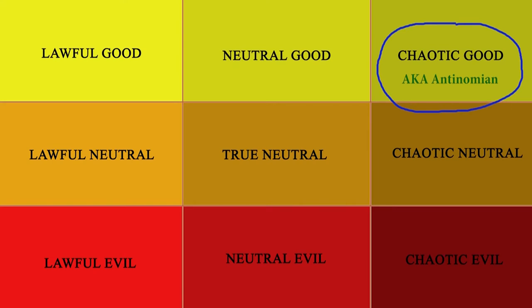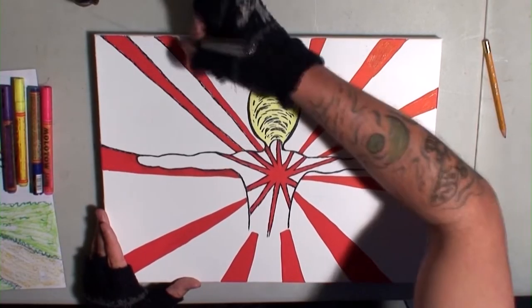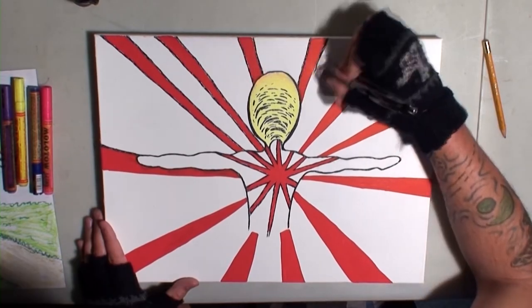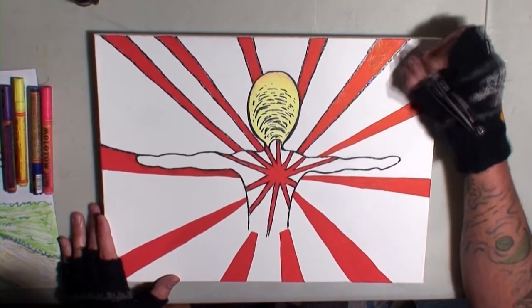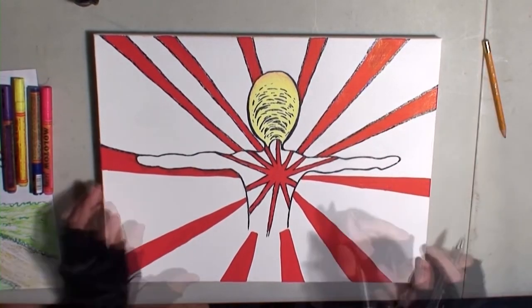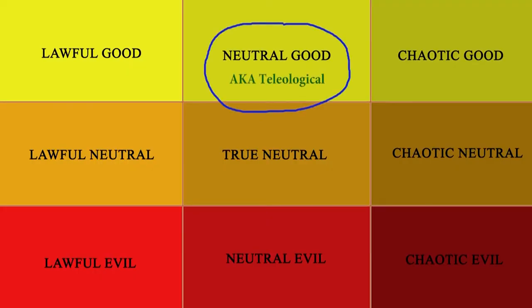Teleological is the middle ground. You take into account all your choices and feelings before moving forward. You can choose to follow the rules of the lawful good, or you can interpret and compromise the rules for what you believe to be right. So teleological would be neutral good.